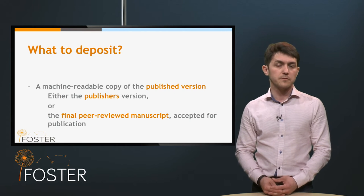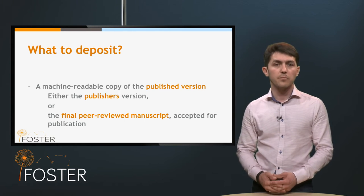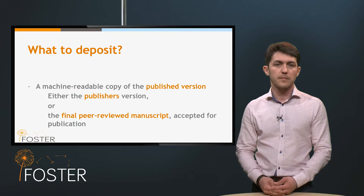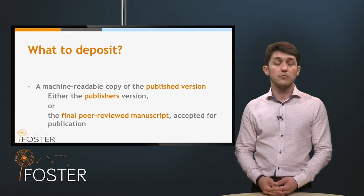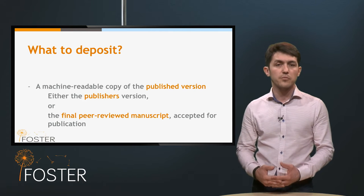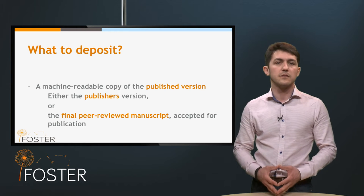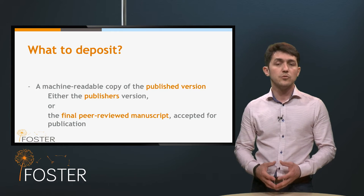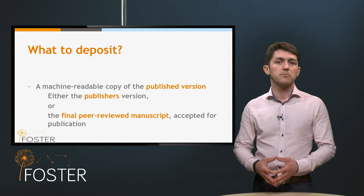Now, what should be deposited? The beneficiary should deposit the machine-readable electronic copy of the published version. This means either the publisher's final version of the publication, including all the modifications from the peer review process, the copy editing, the stylistic edits, and the formatting changes — usually packaged as a PDF document —